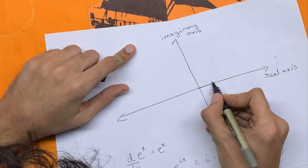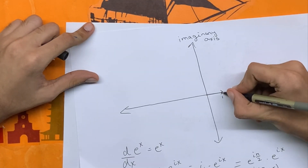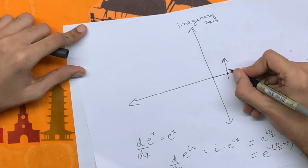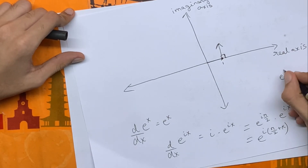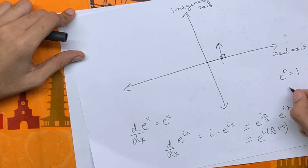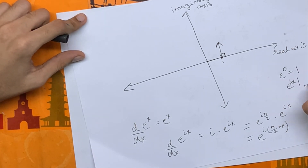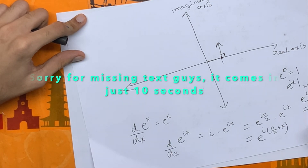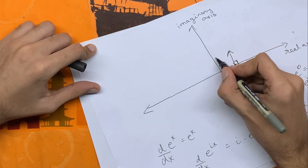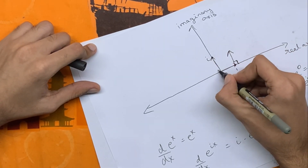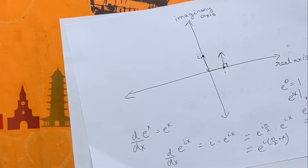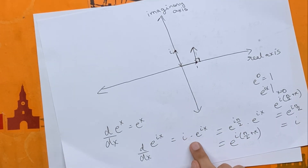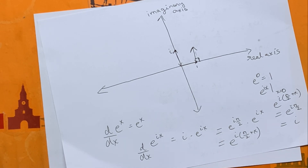So starting at this vector, taking a derivative rotates it 90 degrees. For example, e to the power 0 is 1. Taking the derivative of e to the power i·x at x equals 0, we get e to the power i·π/2, which is i — so we end up at i on the imaginary axis. Every time you take a derivative at any x, you multiply by i, which is a 90-degree rotation. This is just extra information about e to the power i·x and I thought you guys would enjoy it.